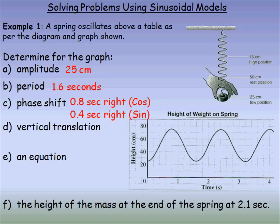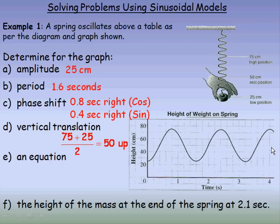The vertical translation is how much the graph has been moved up from the horizontal axis. One way to find it is to average the trough and the peak values to find the middle — so averaging 75 and 25, adding them and dividing by 2, gives a vertical translation of 50. Also, looking at the diagram, 50 is the rest position, which confirms that's where the vertical translation should be.